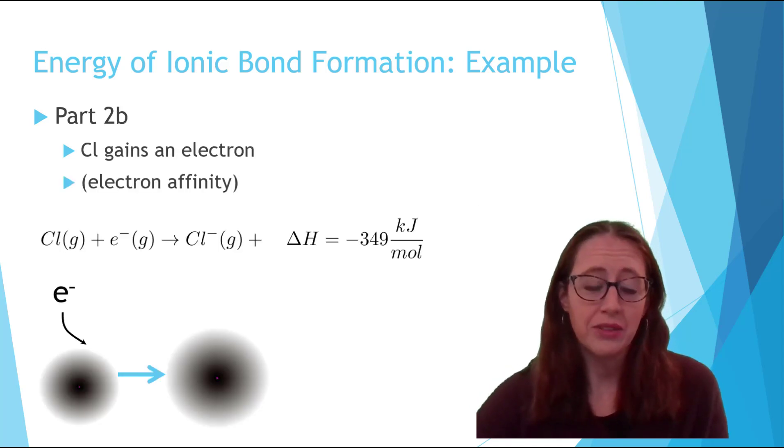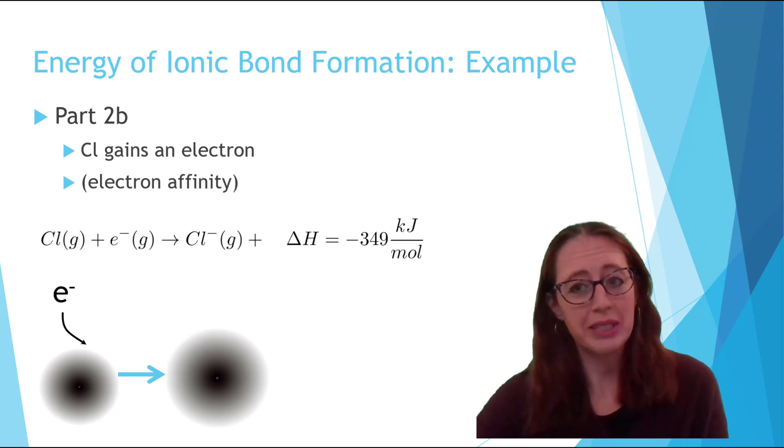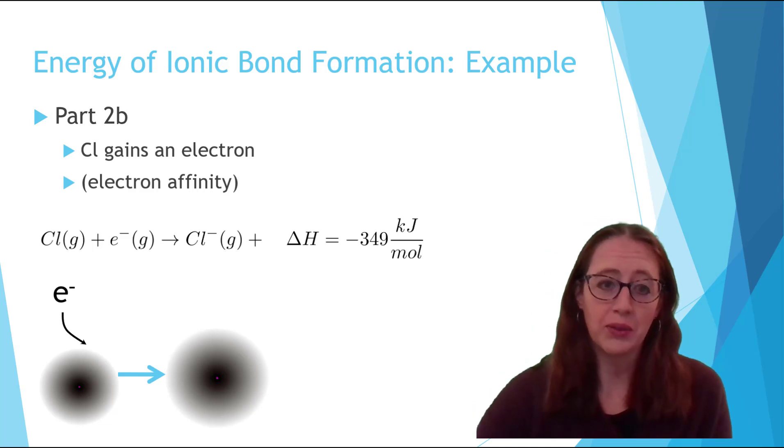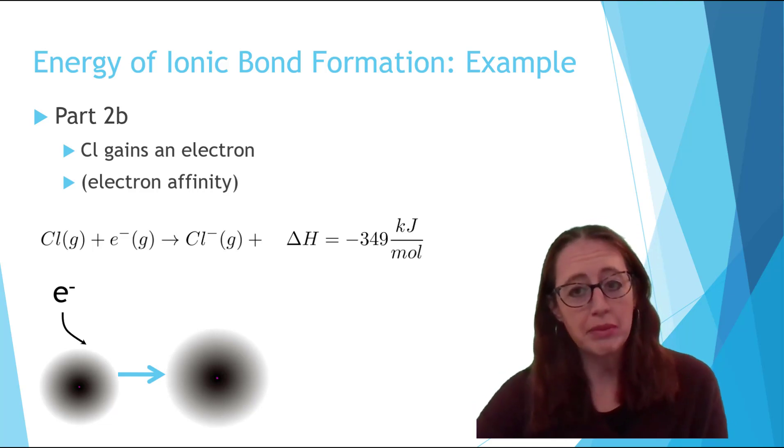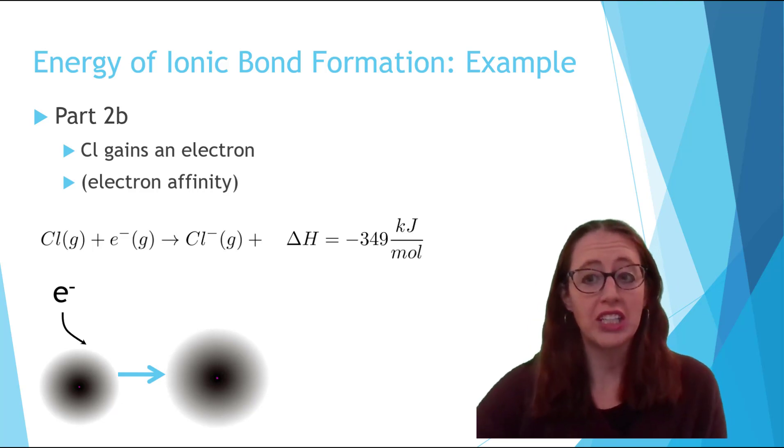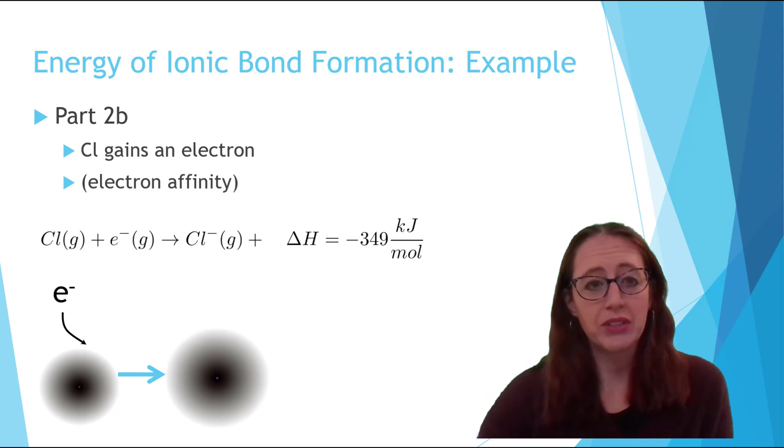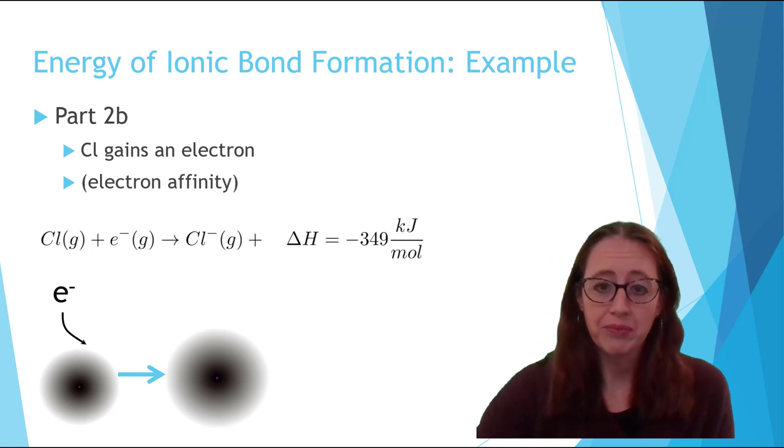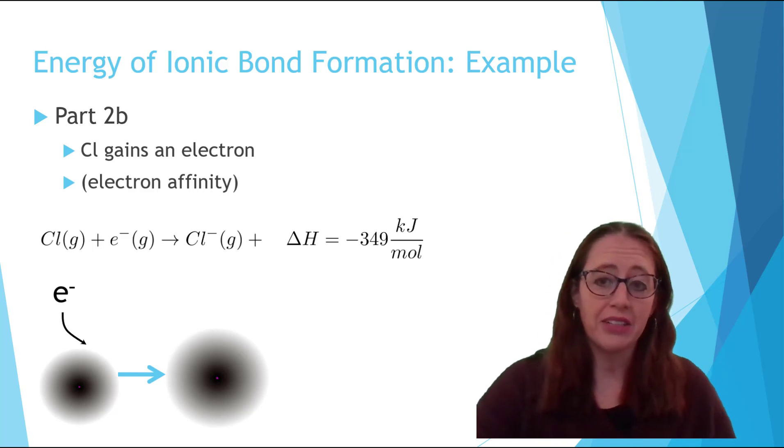Now we can do the next part, which is chlorine must gain an electron to become chlorine minus. As you remember from previous chapters, this is called electron affinity. For chlorine, that's negative 349 kilojoules per mole. Notice this is a negative value, meaning that energy is released when it happens.